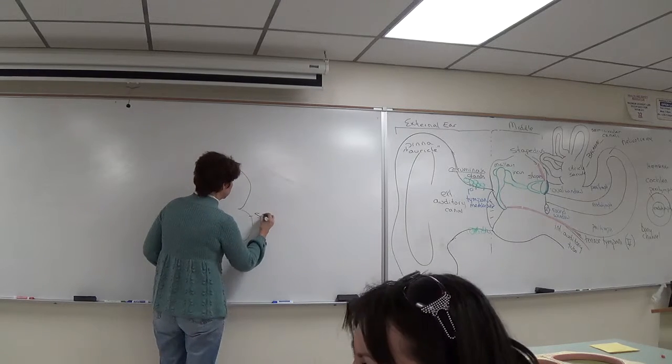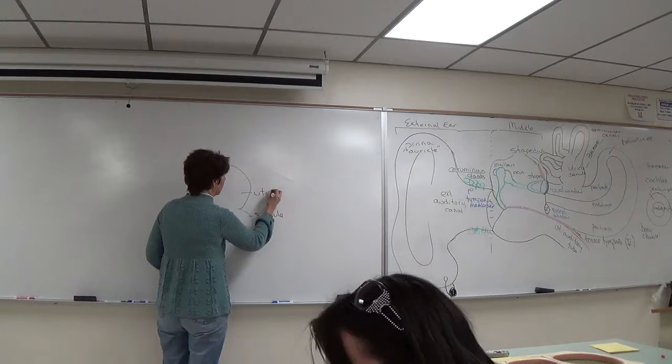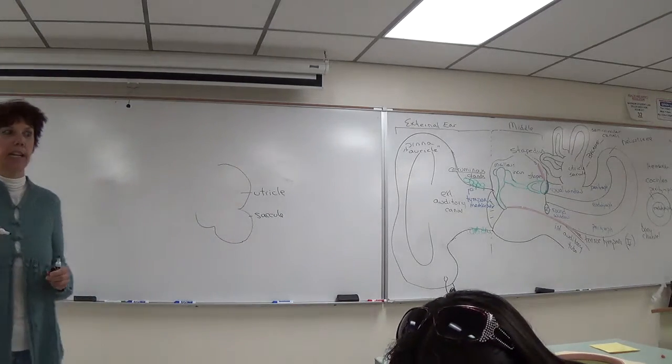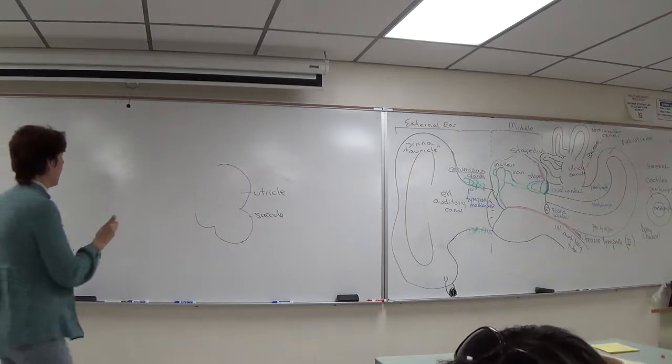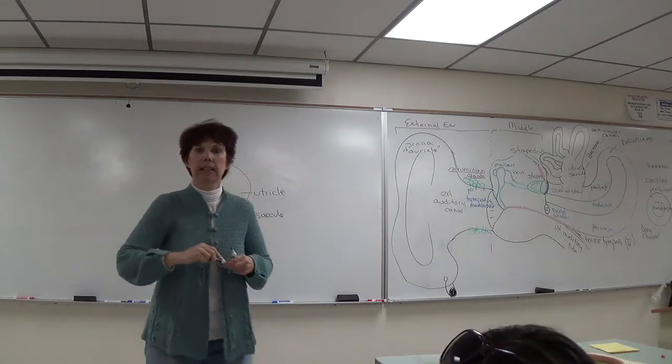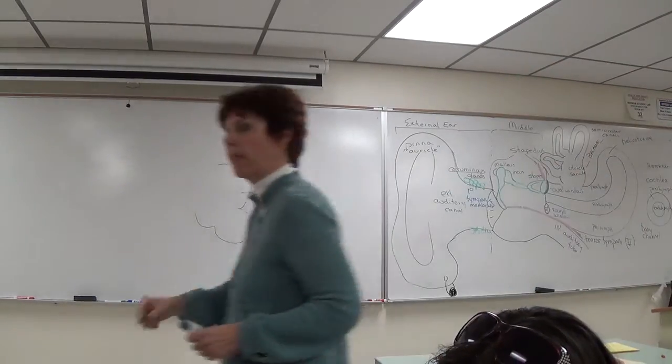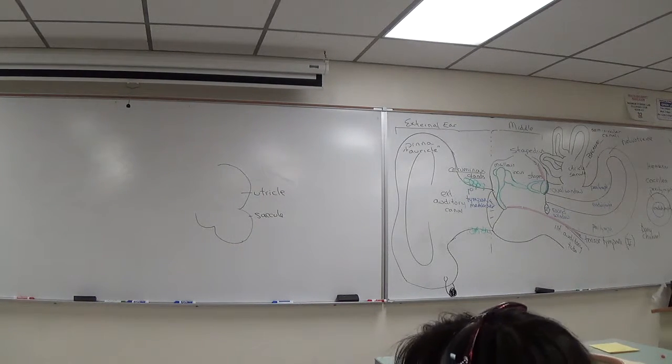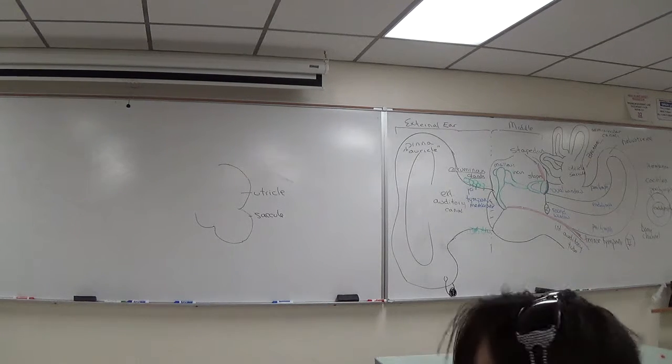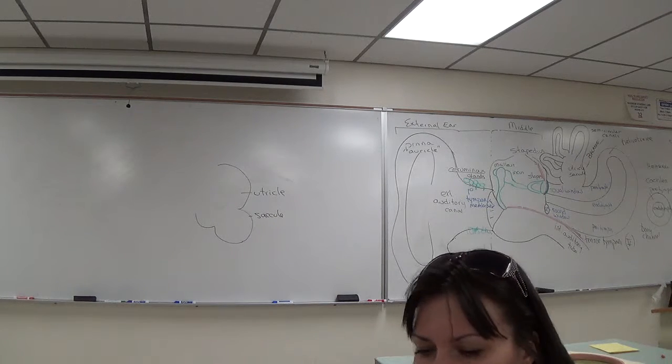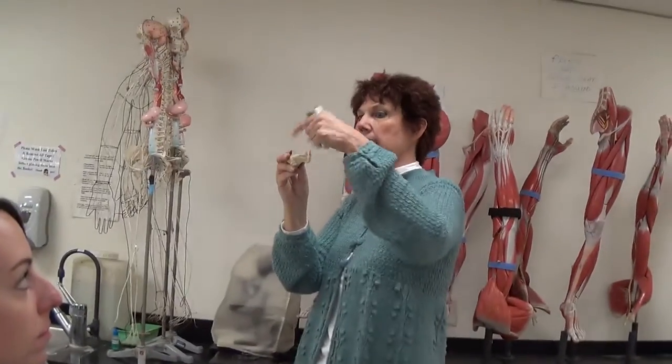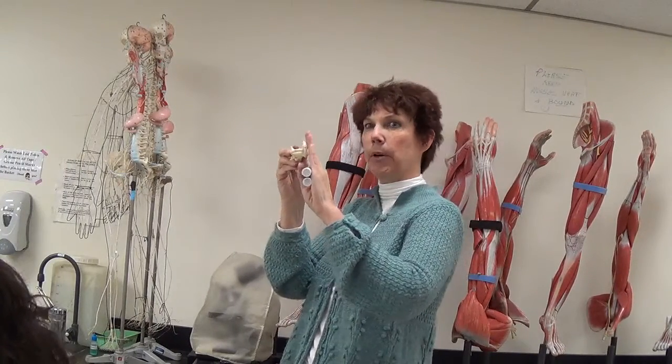So we have the saccule, the utricle, and then we have semi-circular canals. So do you see any semi-circular canals on your ear models? So the cochlea is medial, and so there is one that's kind of parallel with the ear. That's the superior. That would be like this wall right here. So that would be the superior or anterior semi-circular canal. The back wall would be the posterior, and the floor would be the orientation of the lateral.